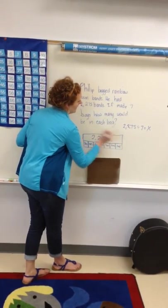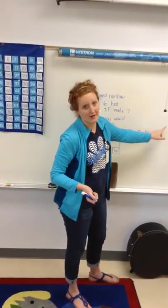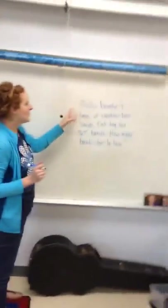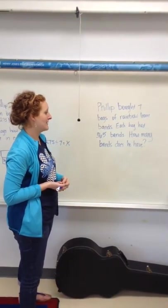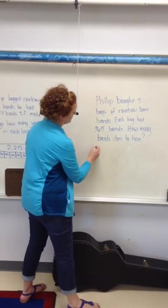Now, we're going to come over here and look at this one. Phillip bought seven bags of rainbow loom bands. Each bag had 365 bands. How many bands does he have?